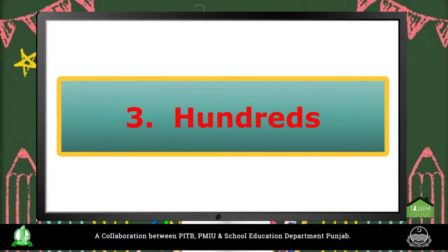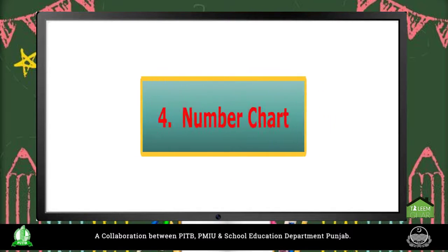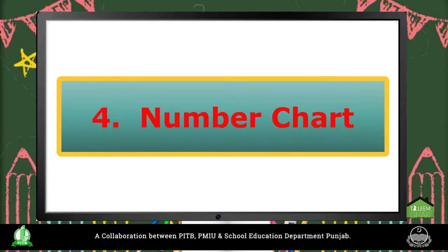Come children, now we will read Topic No. 3 from your book — 100. 10, 20, 30, 40, 50, 60, 70, 80, 90, 100. You can read and write in your book. Now we will read Number 4.